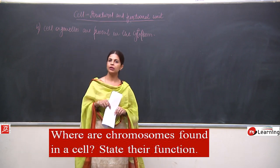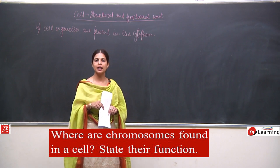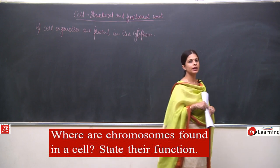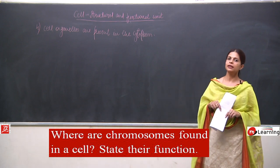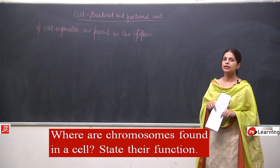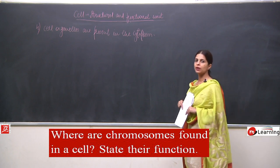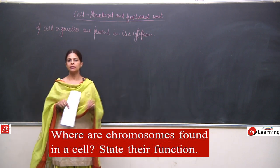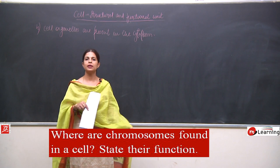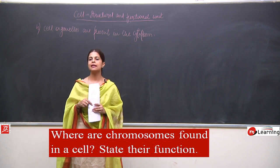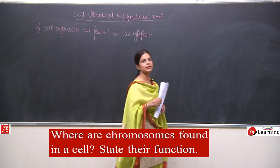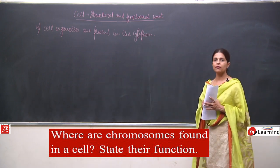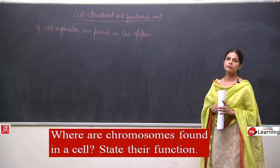Chromosomes are thread-like structures present in the nucleus and play a very important role in cell division and the transfer of traits from one generation to another. On these chromosomes, very minute structures are present which are known as genes, and these genes decide the characteristics of the species. The number of chromosomes also varies from organism to organism.